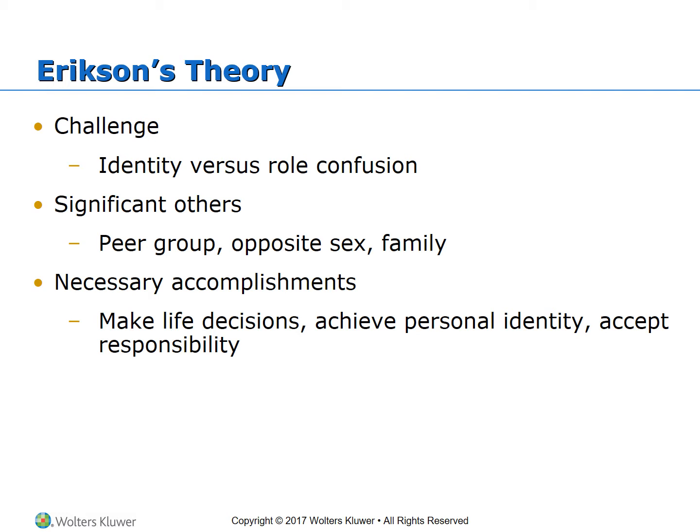Significant others — adolescents have their peer groups. Peer groups have more of a lasting influence on adolescence. Their peers are more important than family. Peers can be of great influence on the individual's present and future lifestyle choices. Necessary accommodations: they have to make life decisions, achieve personal identity, and accept responsibility.